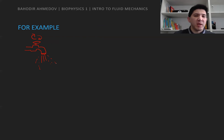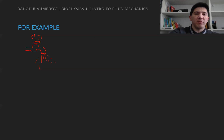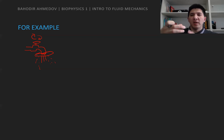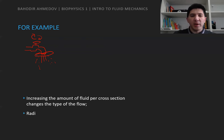This example reveals ideas about the transition between turbulent and laminar flow. If we increase the amount of water, the flow can change from laminar to turbulent. Also, if you have turbulent flow and increase the radius or diameter of the pipe, the flow becomes more laminar and smooth. So increasing the amount of fluid per cross-section changes the type of flow, and the radius of the medium also changes the type of flow.